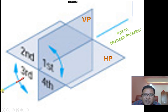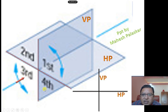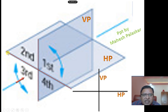Once again I will explain. If you observe in this direction, VP will be seen as a vertical line and HP will be seen as a horizontal line. So VP is this vertical line and HP is this horizontal line when observed from this direction.